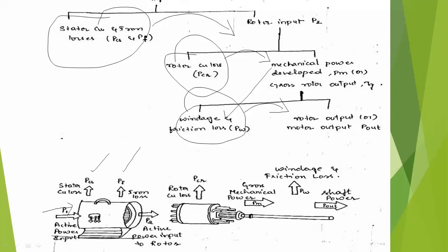The stator is mounted onto a base with screws. The rotor is a squirrel cage rotor inserted into the hollow cylindrical stator. The rotor has a shaft. In the rotor, copper loss is omitted and gross mechanical power is developed. From this, windage and friction losses go out, and we get shaft output power — that is the rotor output, or brake horsepower (BHP).